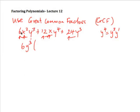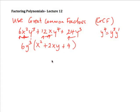We look at each term and ask: what do we multiply by to get back to the original? The 6 is there, x² is needed, and y³ is already factored out — giving the first term. For the second term we need 2 (since 6×2=12), x, and y (since y³·y = y⁴). For the third term, 6×4=24 and y³ is already there. So our factored form is 6y³(x²y + 2xy + 4).